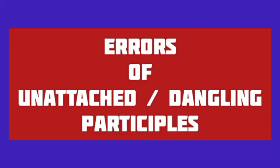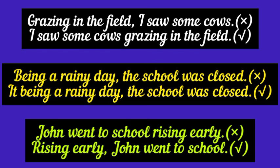Now, for some common errors in the use of participles, known as unattached participles. For example, grazing in the field, I saw some cows. Who was grazing in the field? It's a wrong sentence. This is the correct sentence: the cows were grazing in the field, I saw them.